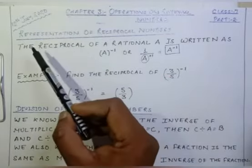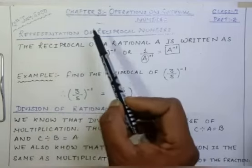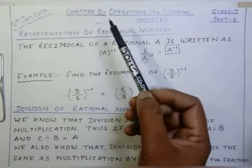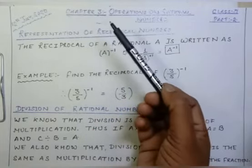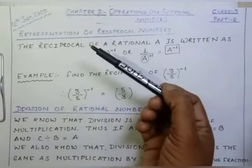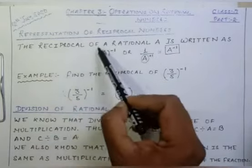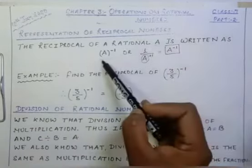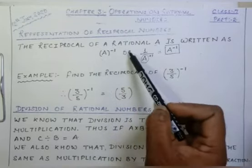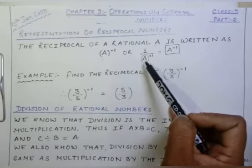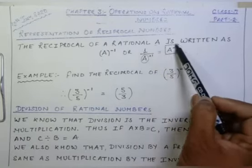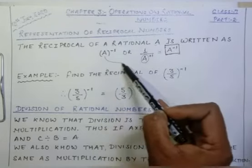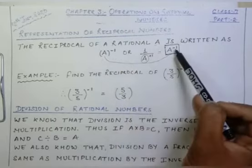Today I am going to start with a very fresh topic, that is representation of reciprocal numbers. I hope most of you know how to convert a number into its reciprocal form. The reciprocal of a rational number 'a' is written as a to the power minus 1, or 1 upon a. If we convert it further, it will take the form a to the power minus 1.